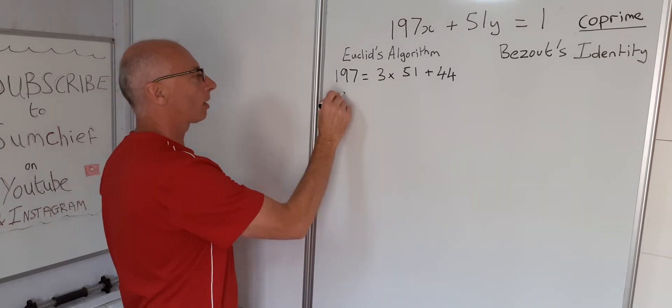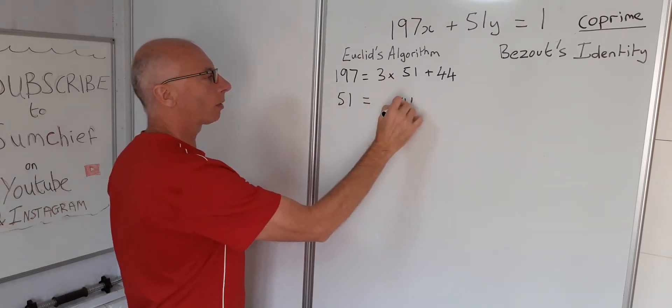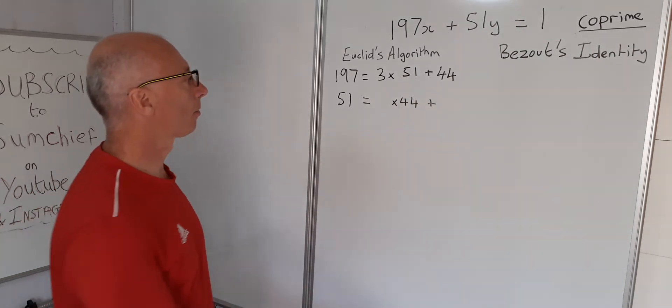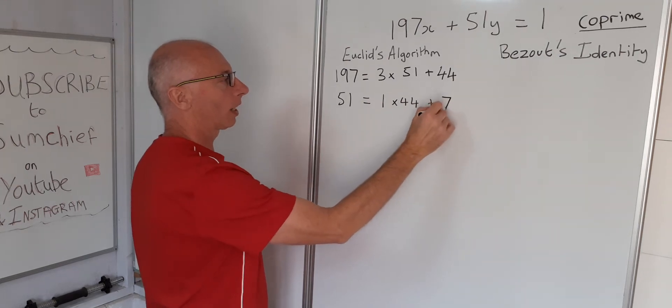So now what we say is 51 equals something times 44 with another remainder. So 1 times 44 is 44 and 7 remainder.